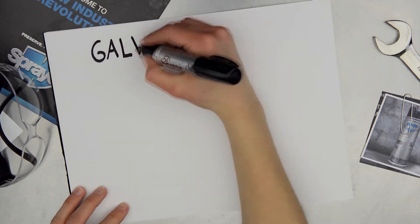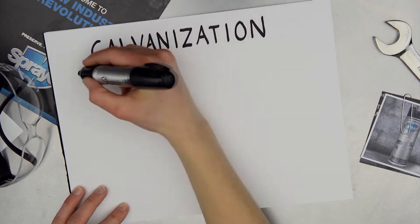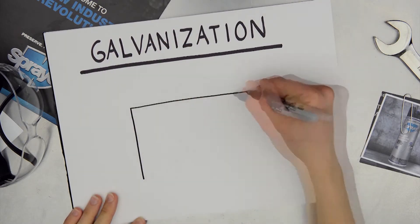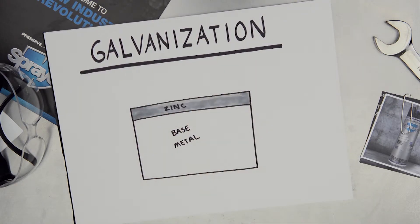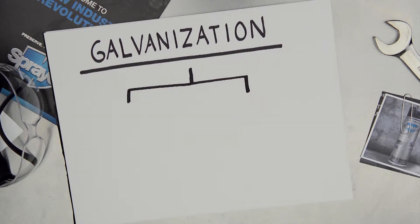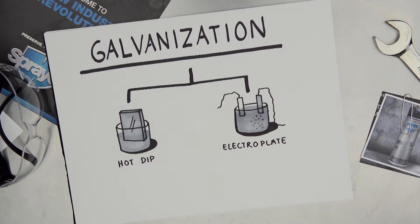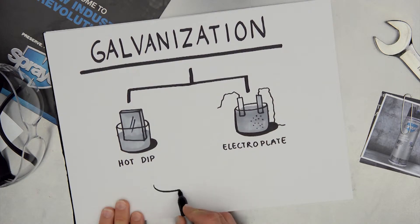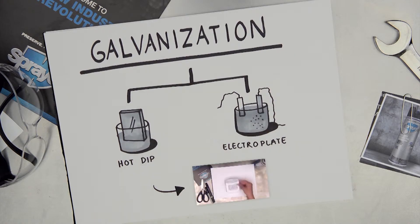At its most basic definition, galvanization is a protection of iron or steel against corrosion with an application of protective zinc coating. Galvanization usually takes place through either the hot dip process or electroplating. To learn more about the science behind galvanization, make sure you check out the WL740 video.